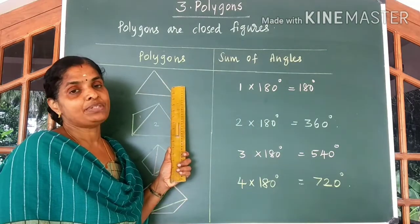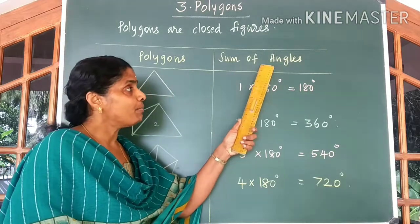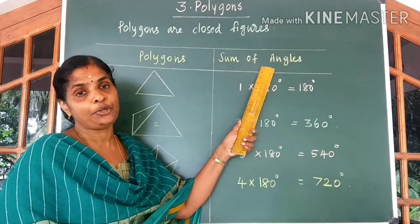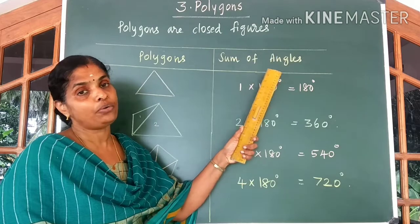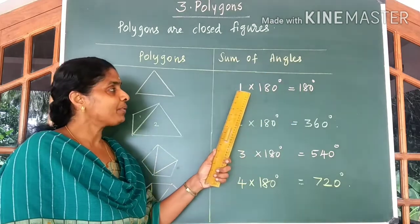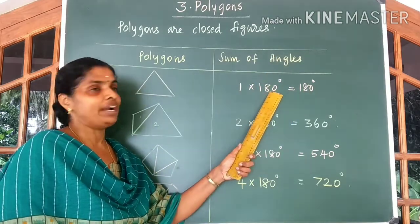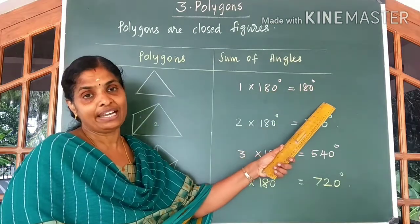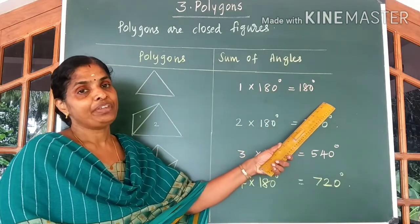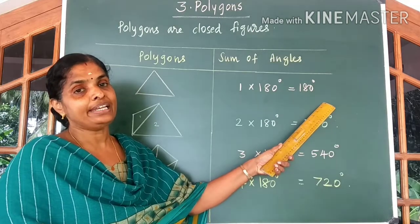We have studied in our earlier classes that the sum of angles of a triangle is equal to 180 degrees. I wrote it as 1 into 180, which is equal to 180 degrees. Now let us come to a four-sided closed figure.